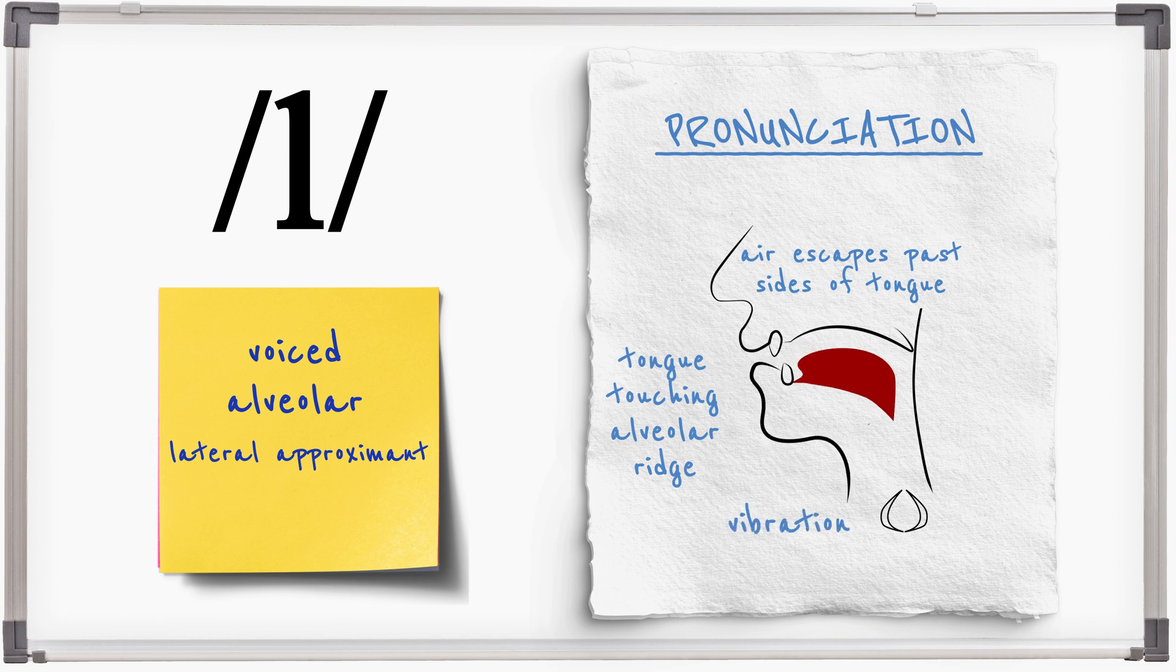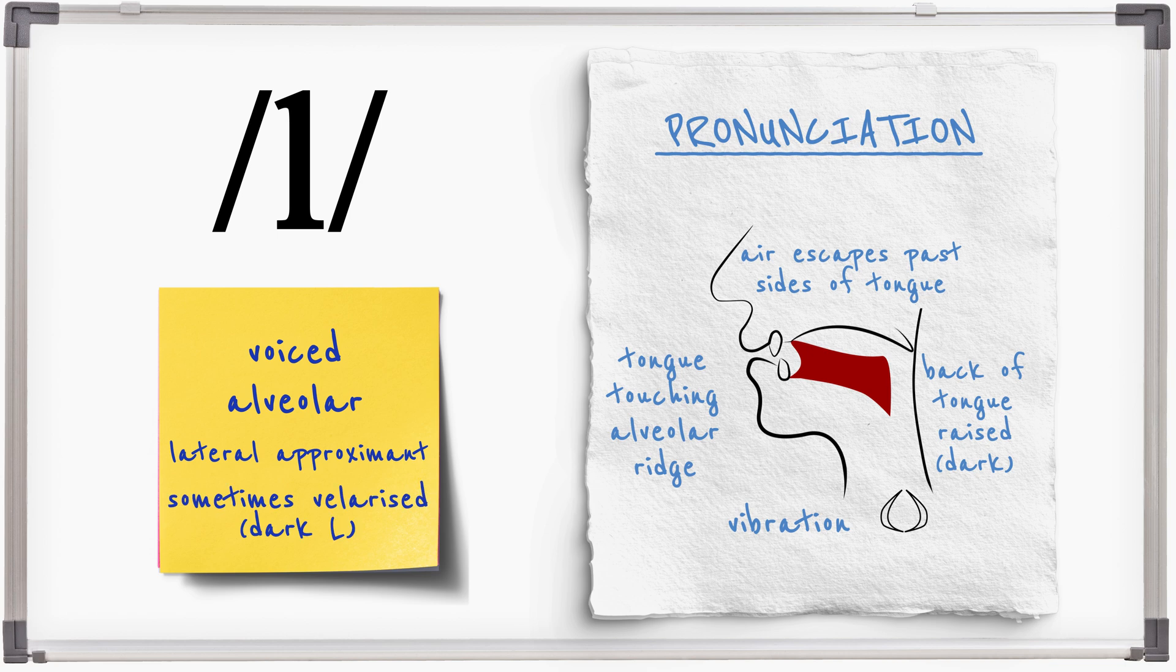The back of the tongue is raised towards the velum in some contexts. This is known as dark L.